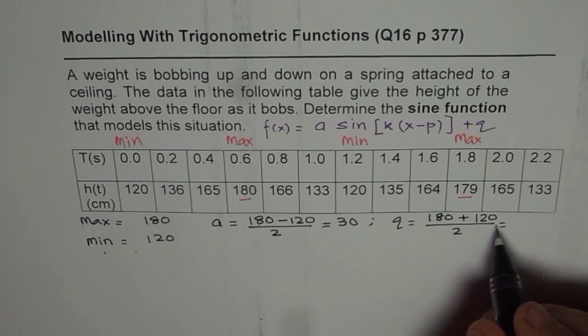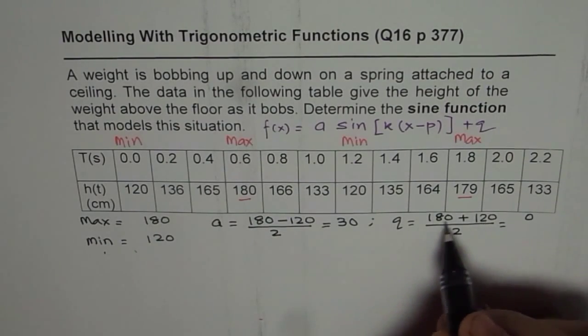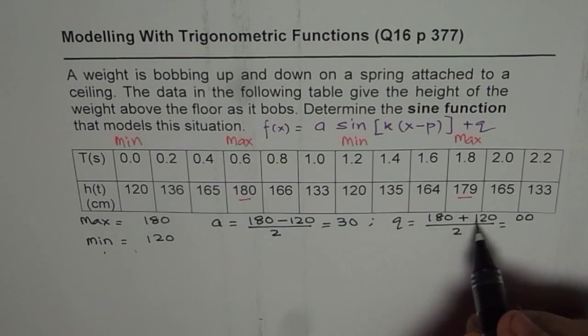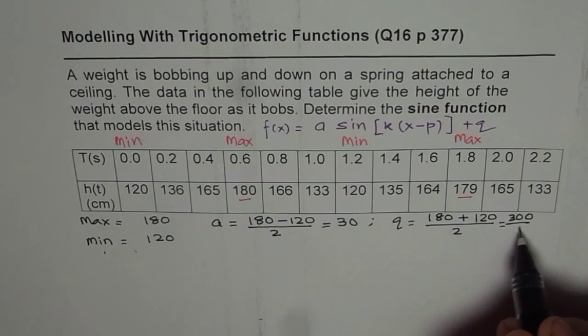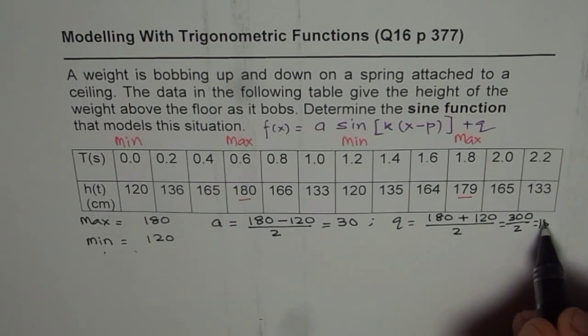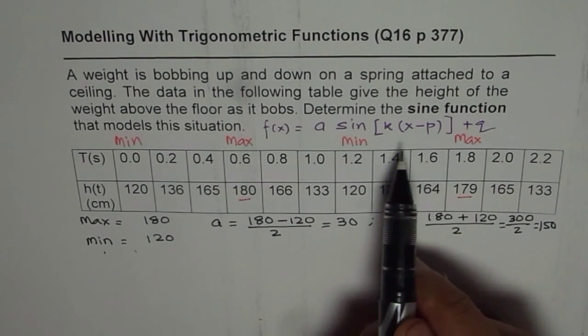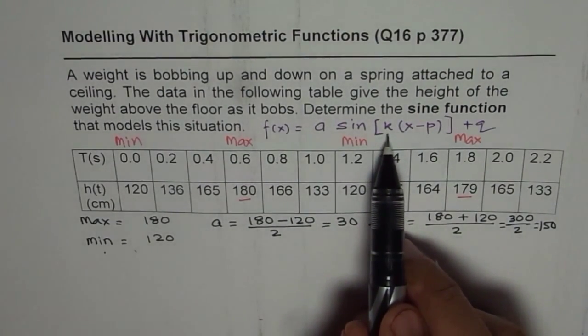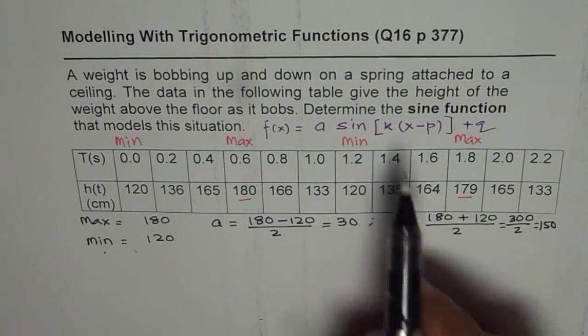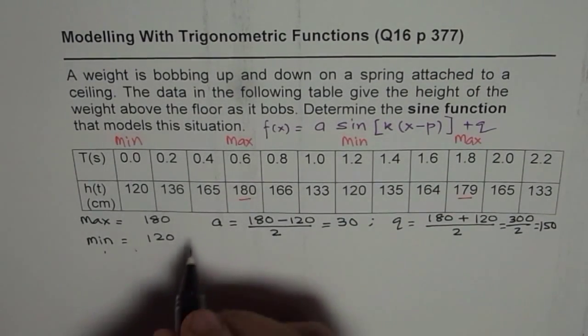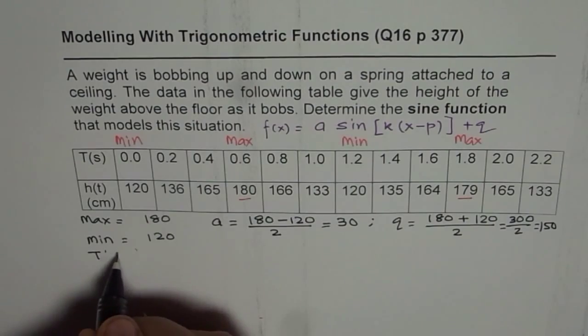So you can also use your calculator and find the value. So 0 plus 0 is 0, 2 plus 8 is 10, so it is 300 divided by 2, which is 150. So Q is 150. Now we need to find K. To find K, we need to find the time period. So let us find what is the value of T, the time period.